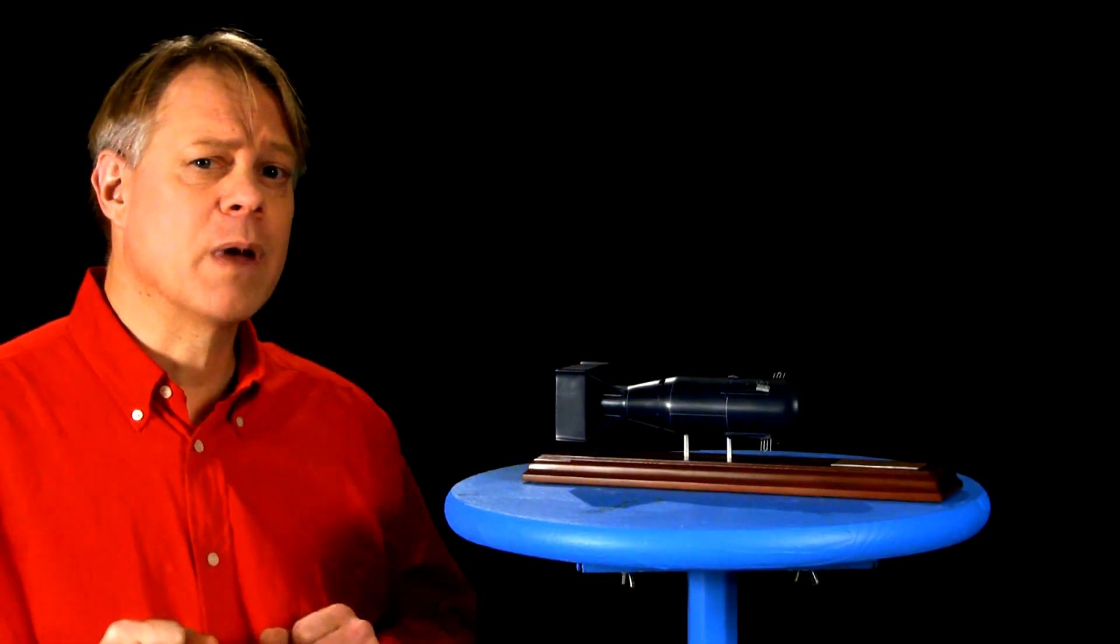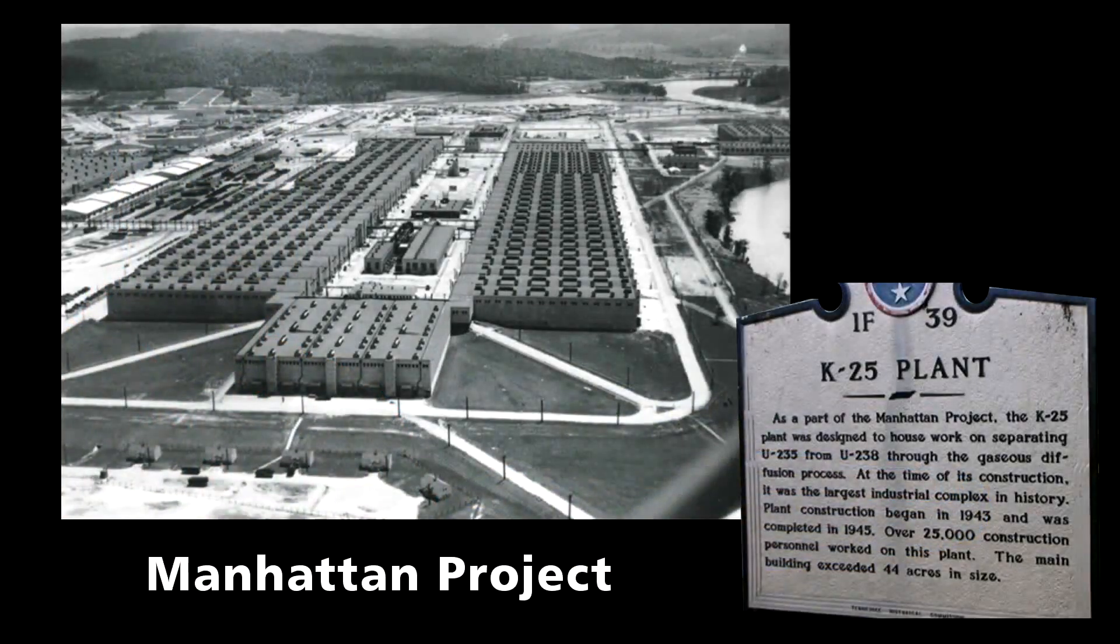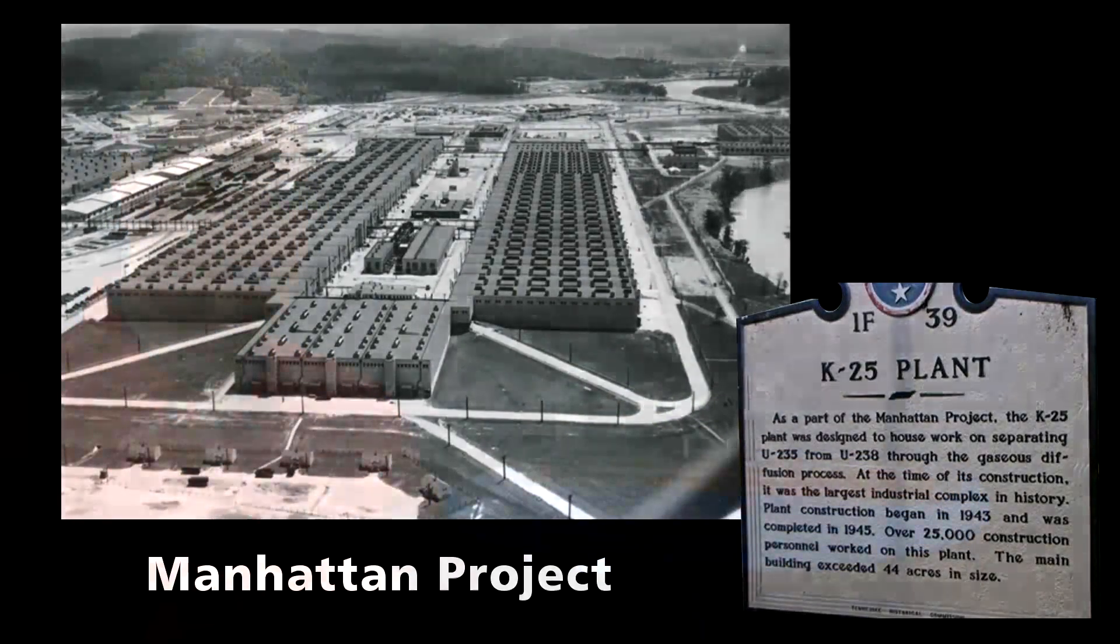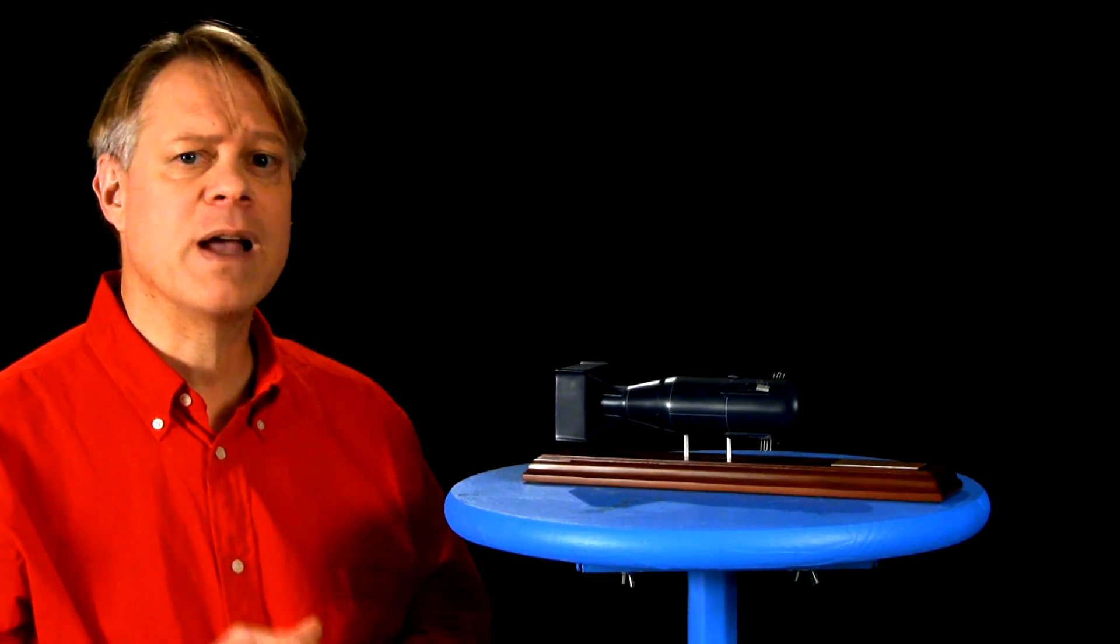Enriching the uranium for the first atomic bomb required a diffusion plant that covered over 40 acres. It housed a maze of 100 miles of piping. These diffusion plants use great amounts of energy to run, compressors generating the pressures needed, and the energy to heat gas flowing through the miles of tubing.